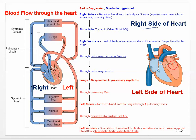The right side of the heart always carries deoxygenated blood; the left side carries oxygenated blood. If you remember that oxygenation happens in the lungs, then you know that blood going to the left side of the heart — if it's oxygenated — has got to be coming from the lungs.